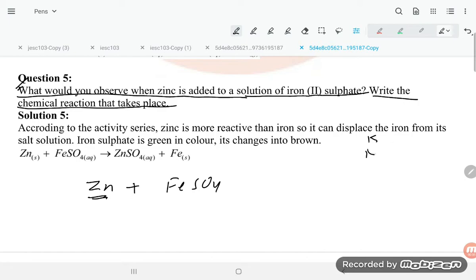This is the order to learn: potassium, sodium, calcium, aluminum, zinc, and iron.